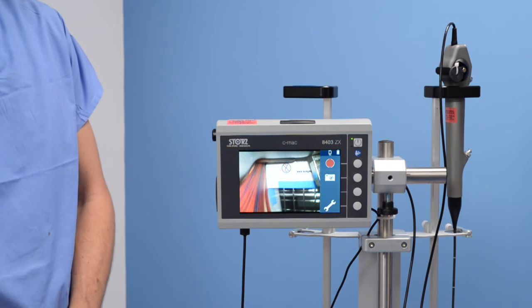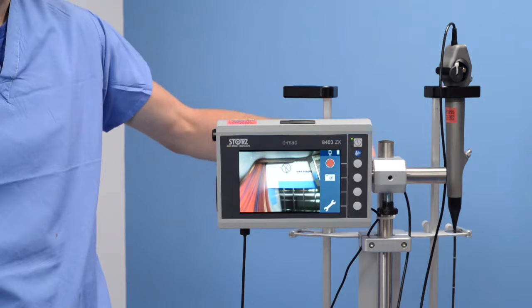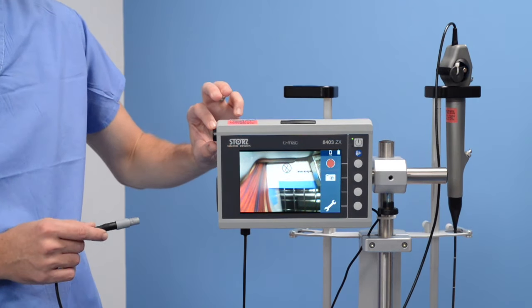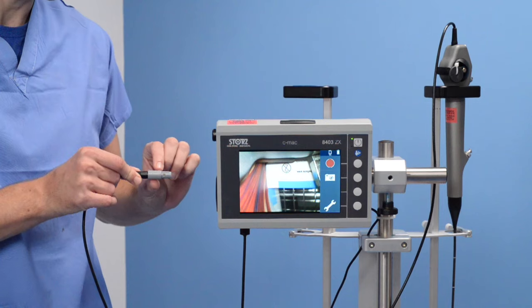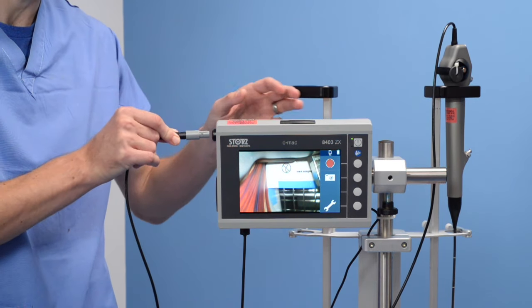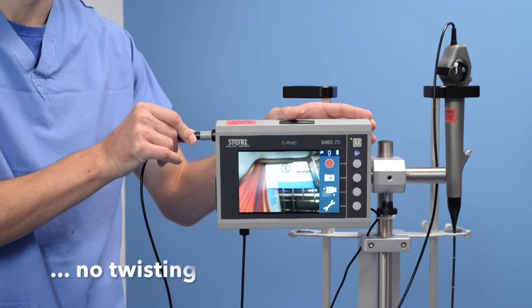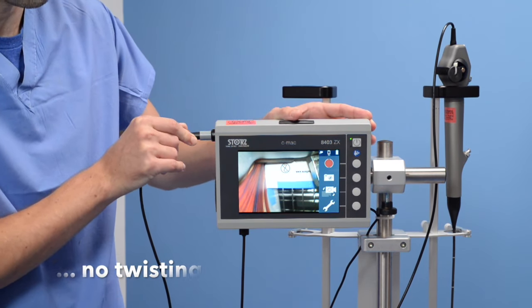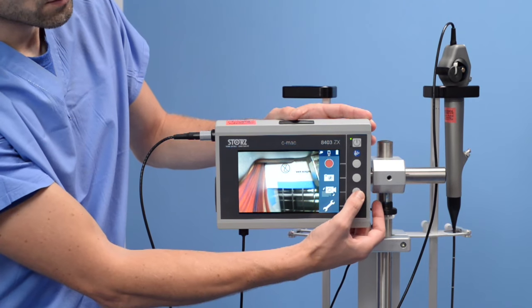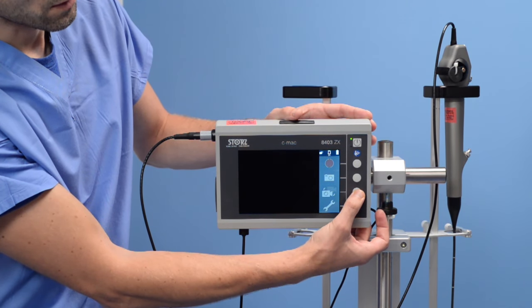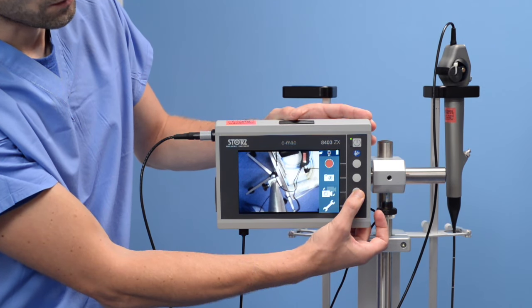To connect the fiber optic scope, take the connector to the side port. Marry up the arrows and very gently push forward. You'll hear a small click when it's engaged. There's no twisting involved. That allows you to change between the video laryngoscope and the fiber optic.